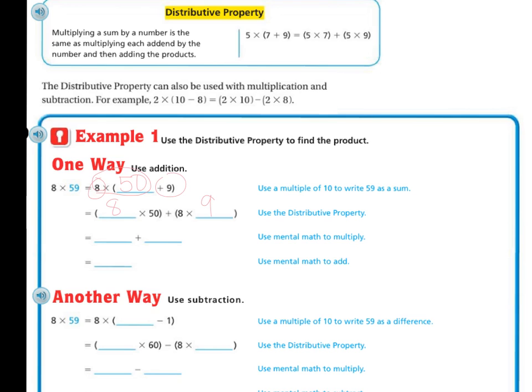It just makes it a little bit easier to solve because 8 times 9 is going to give me 72 and 8 times 50 is going to give me 400. So now when I add them together I get 472. It's just easier sometimes than actually multiplying it all the way out to break it apart into those easy numbers.